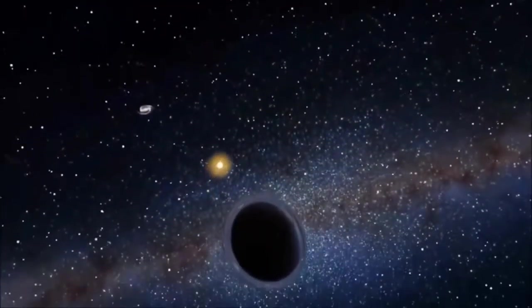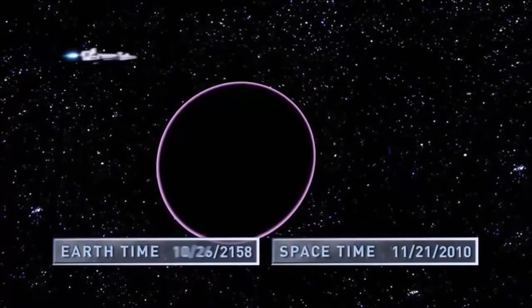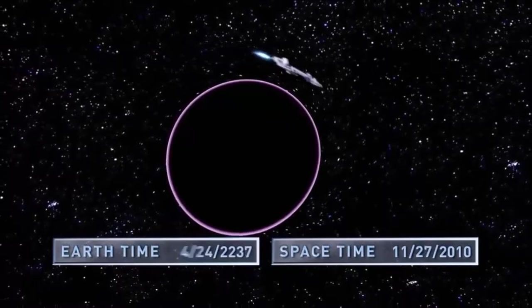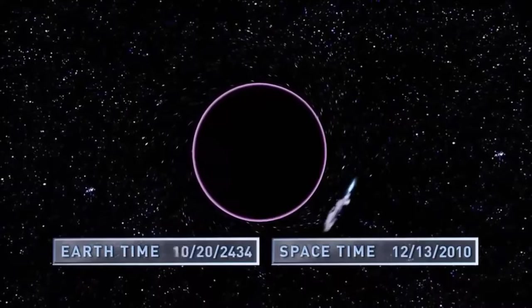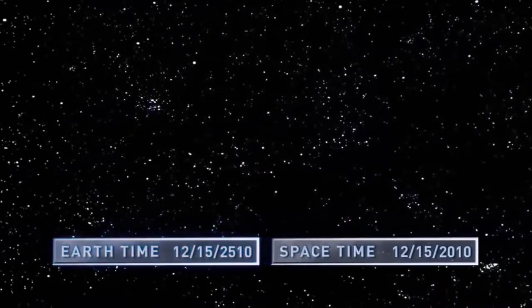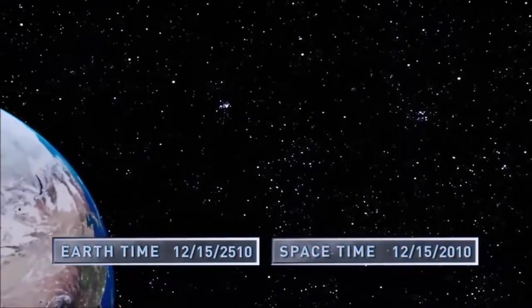But high speed isn't the only way to zip into the future. Einstein's theory of relativity says high gravity also slows down your clock. The kind of gravity you might find near a black hole. Let's say you're in a spaceship and you go and you park yourself just outside a black hole for a while. Once you return to Earth you will notice that many, many years may have passed on Earth but only a few weeks or months will have passed in your own frame of reference. You will have jumped into the future while aging very little. That's really cool.